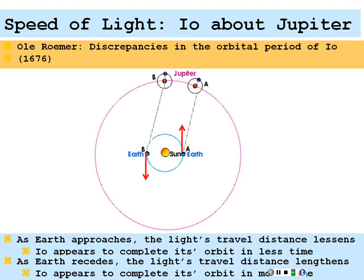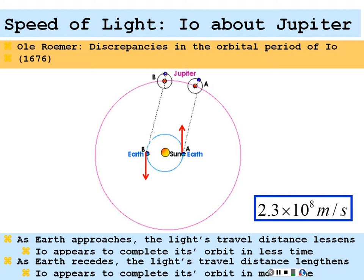That's what Ole Rømer did in 1676. Rømer came up with a speed of light of 2.3 times 10 to the 8 meters per second — really not bad. This is really the very first good measurement of the speed of light, on the order of the value we know today. An excellent, brilliant idea based on the measurement of the moon going around Jupiter.